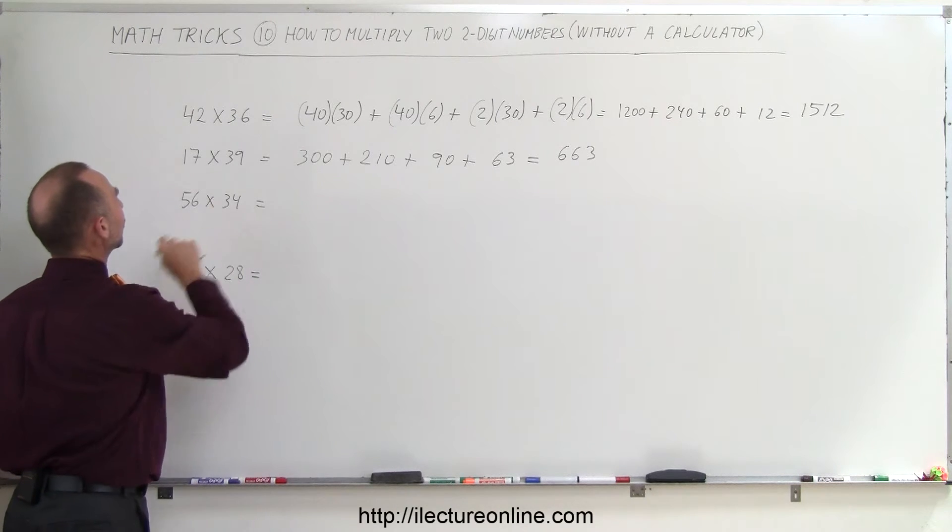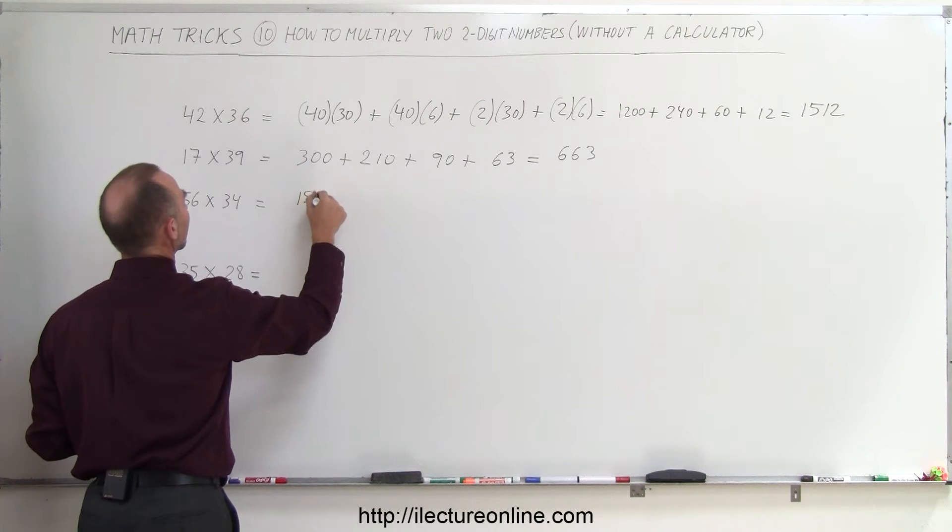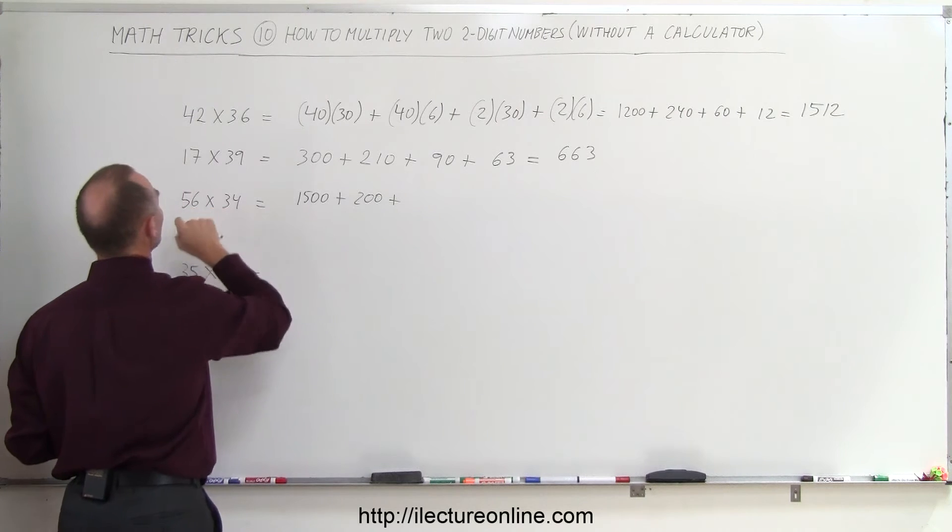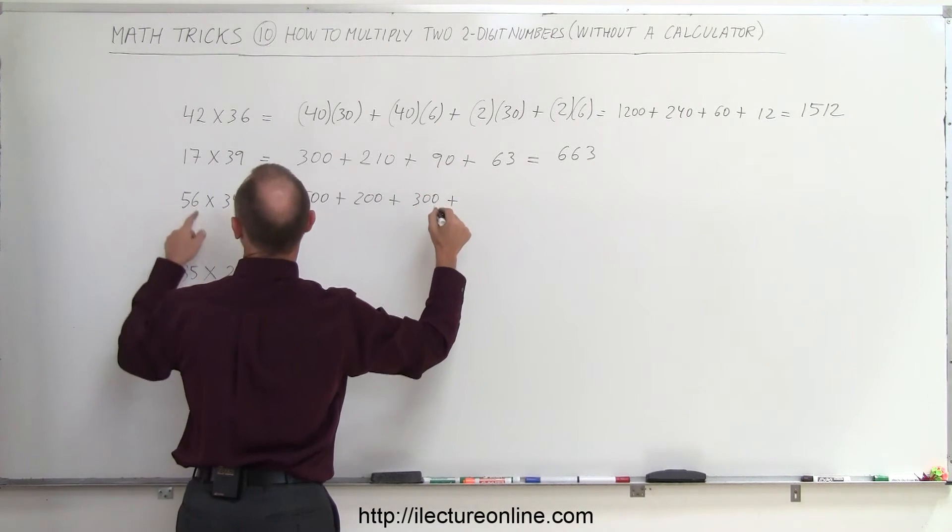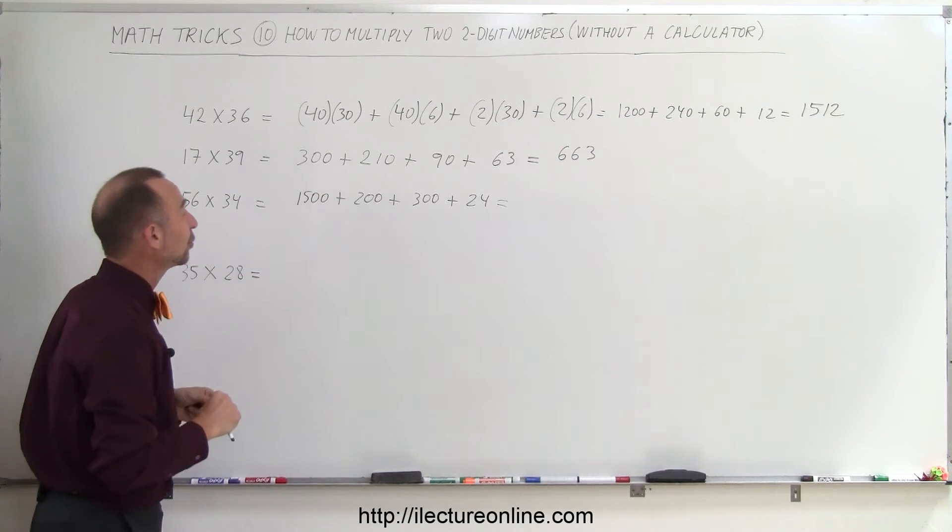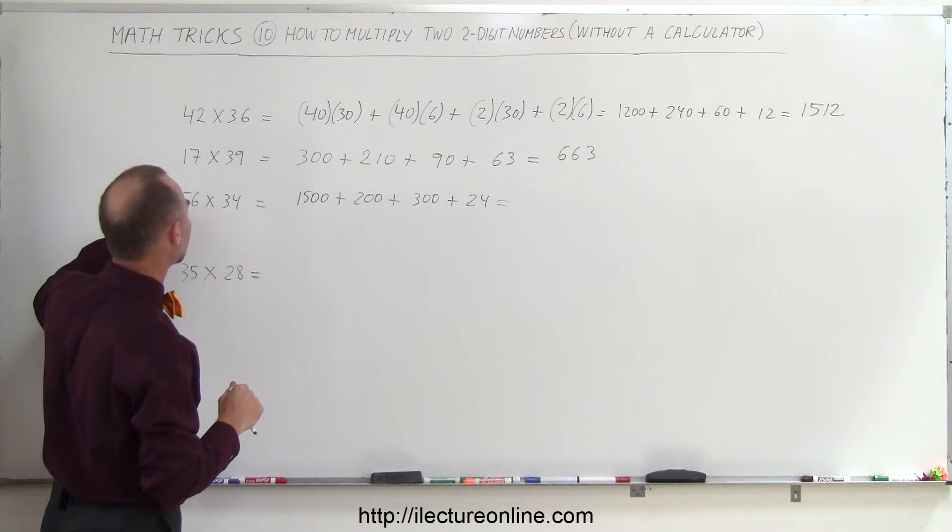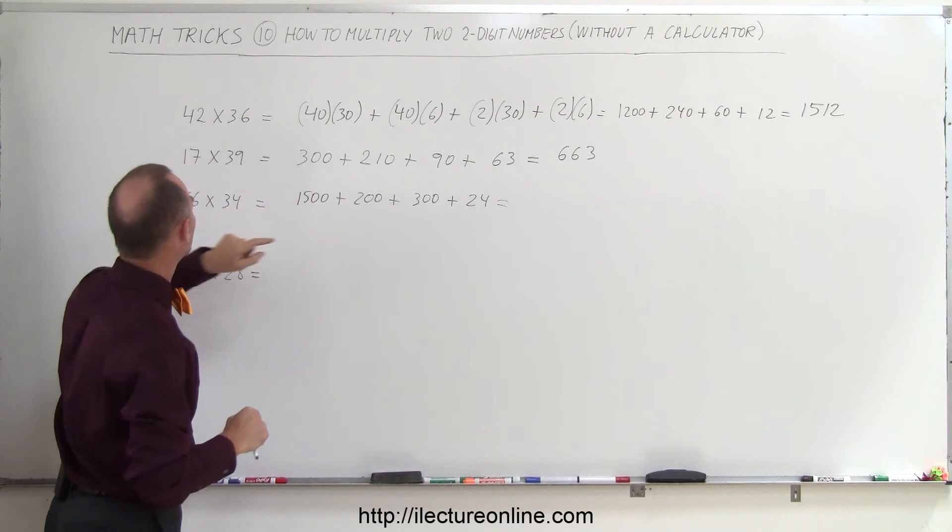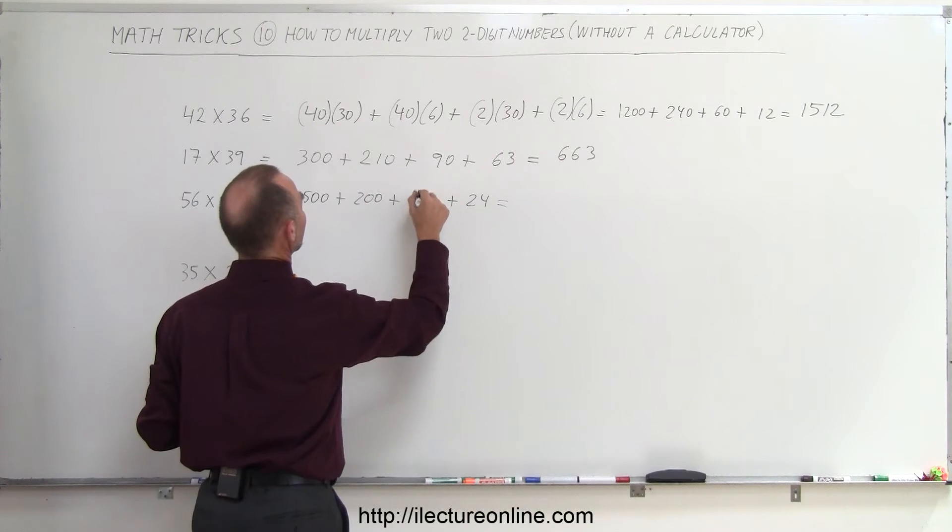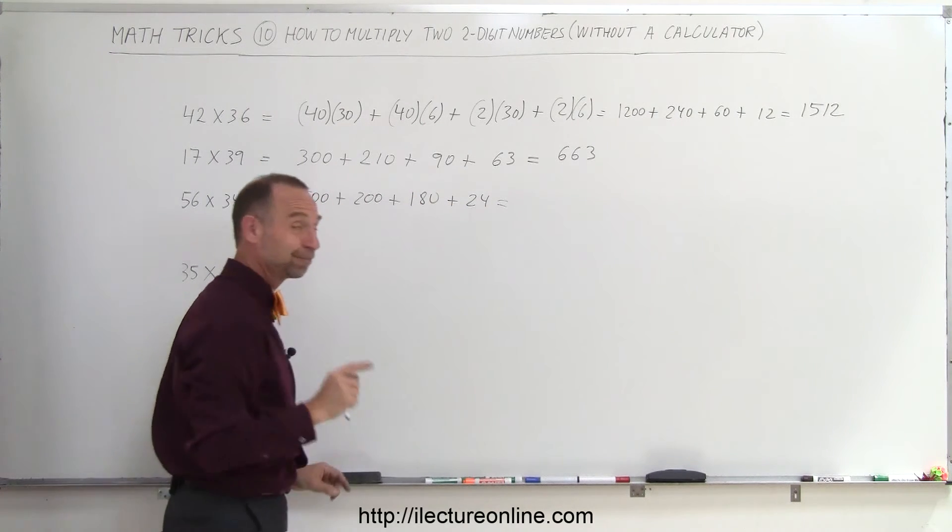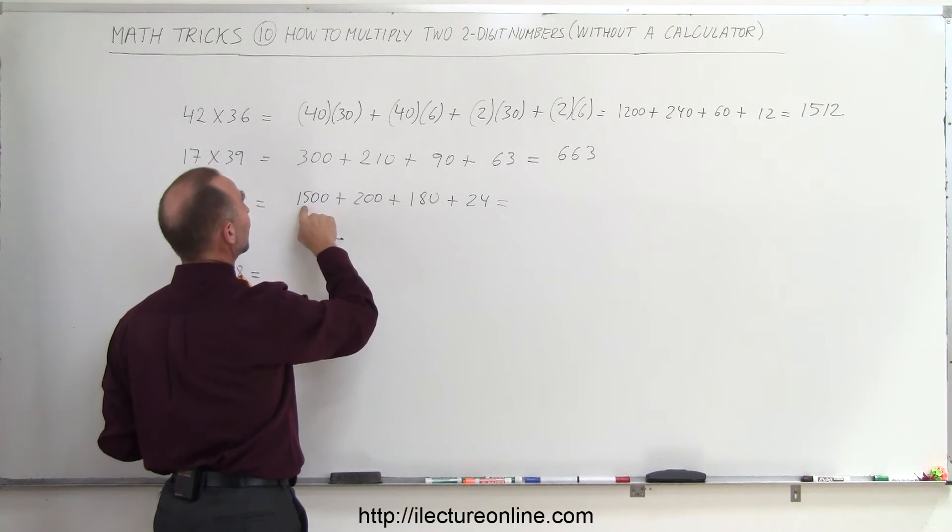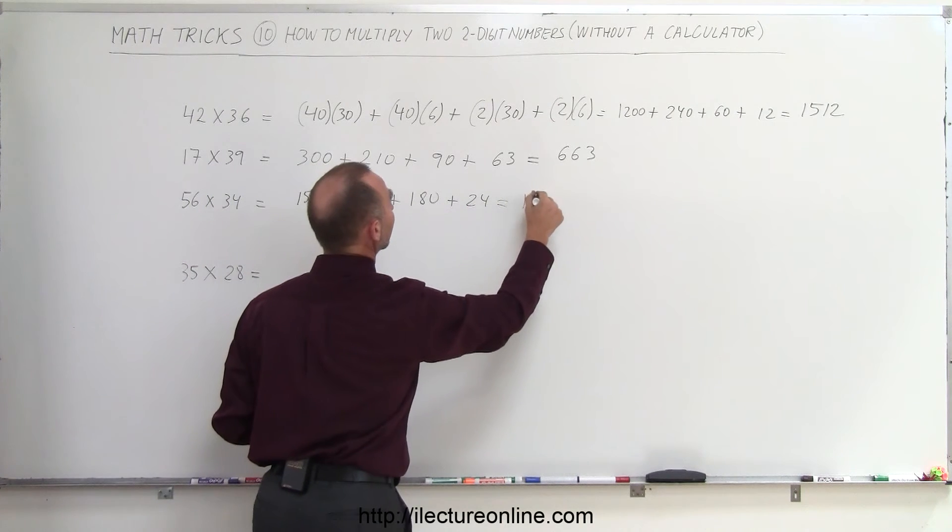Next, 56 times 34, so we go 50 times 30 which is 1,500, plus 50 times 4 which is 200, plus 30 times 6 which is 300, plus 6 times 4 which is 24. Wait, I got the wrong number here. 30 times 6 is 180, and 4 times 6 is 24, still got to be careful. So 200 plus 180 is 380, plus 1,500 is 1,880, plus 24, that would be 1,904.